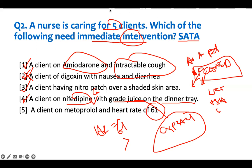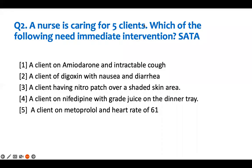So our answers selected are one, two, three, and four — the metoprolol patient with HR 61 does not need immediate intervention. This is how we approach select-all-that-apply prioritization questions. I call it SATA prioritization because it really makes you think.